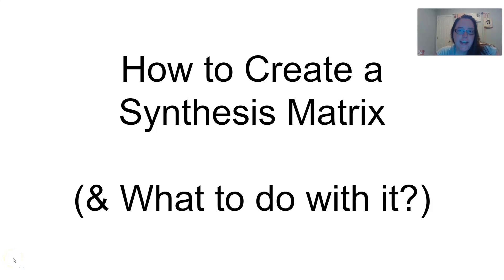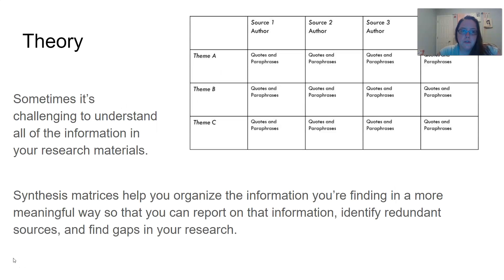The purpose of this video is to talk about creating a synthesis matrix and what you can do with it once you're done. The purpose of a synthesis matrix is essentially to collect and aggregate in a meaningful way information from your sources, because sometimes when you're reading all these sources as you're doing research and you find all sorts of information, it's hard to remember what information came from which source, especially if they're talking about a lot of similar ideas. And sometimes it's also hard to see where the gaps are in your research and maybe identify redundant sources. It helps you look at all your research in one place and collect that information.